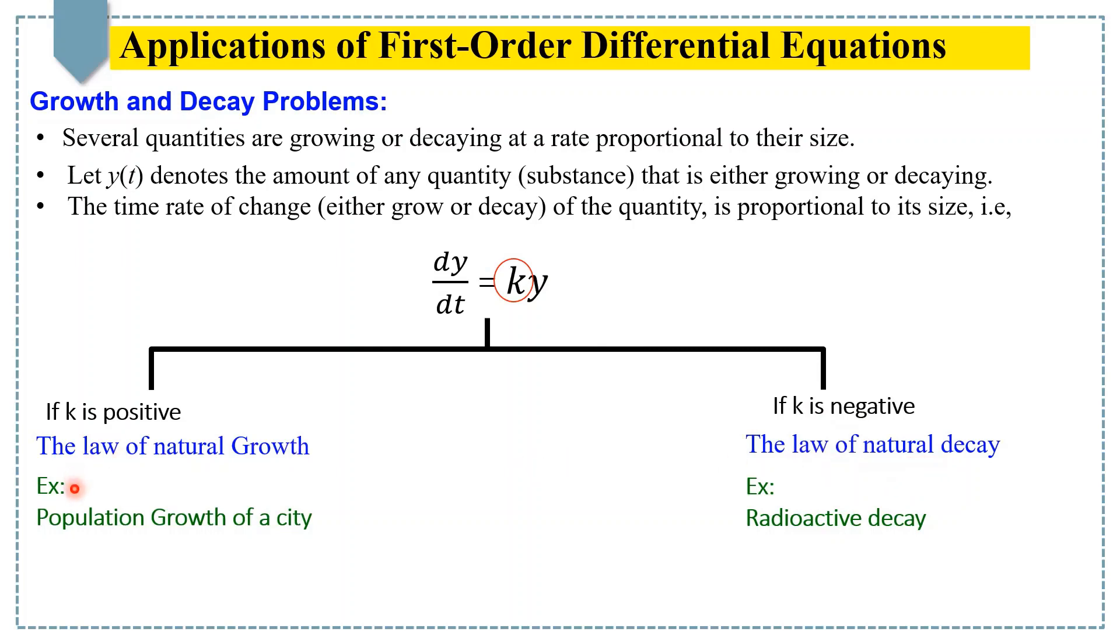For example, population growth of any city would be an example of the law of natural growth. And radioactivity of any material would be an example of the law of natural decay.